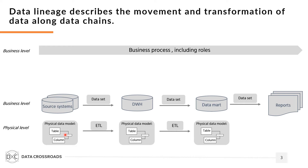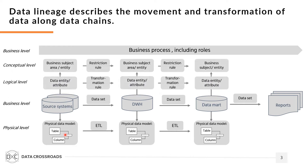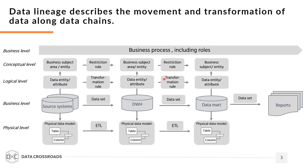We also document data lineage at a higher level of abstraction. In this case, data lineage will be application-agnostic — meaning the documentation at the conceptual and logical levels of the data model. You document data lineage using business subject areas, data entities, and data attributes. You will also think about transformation rules.